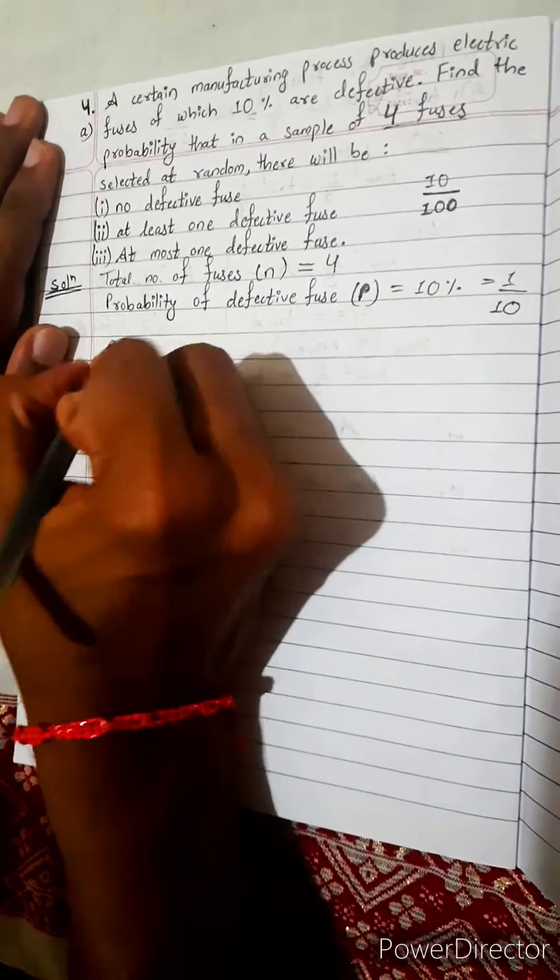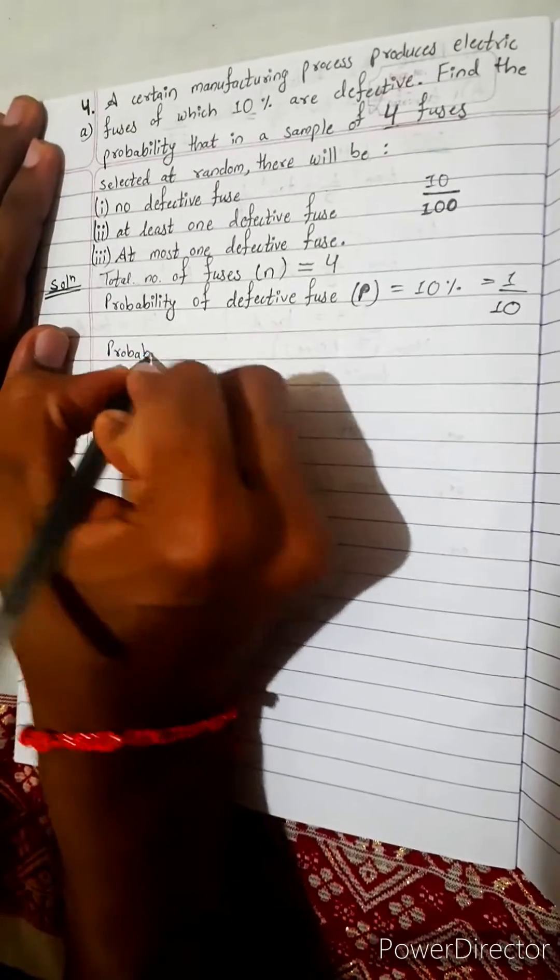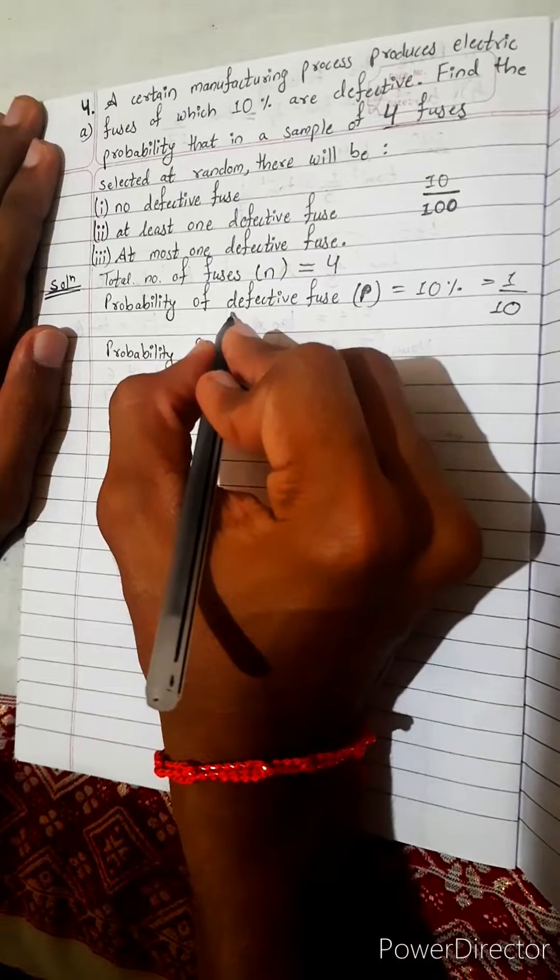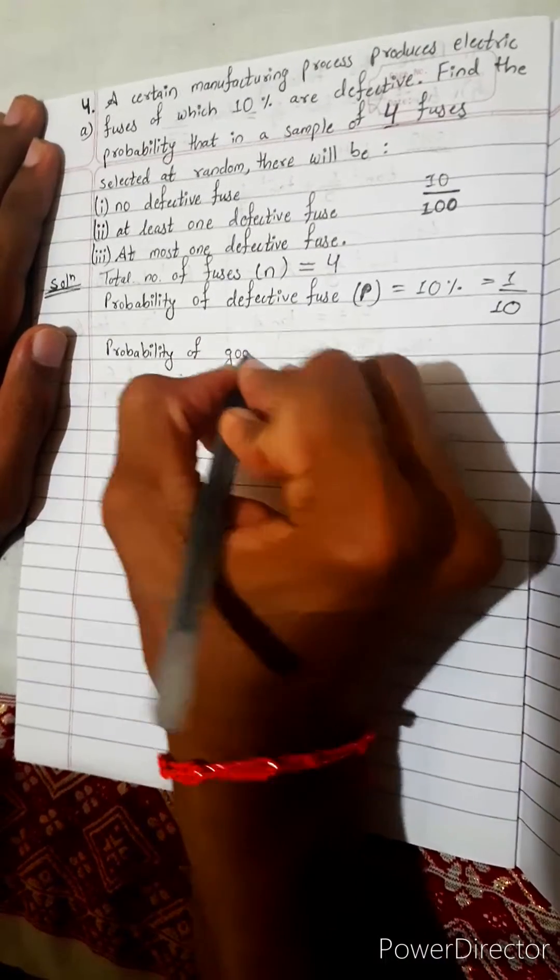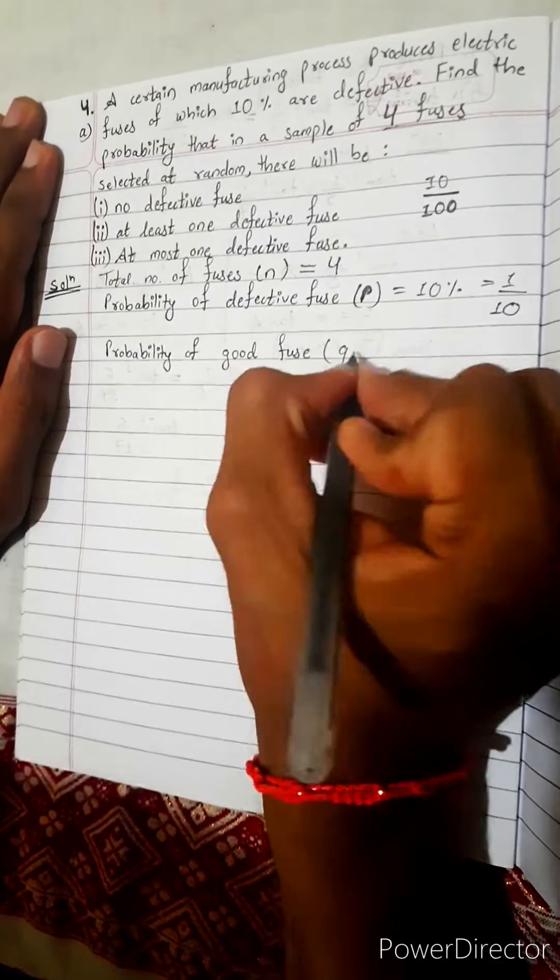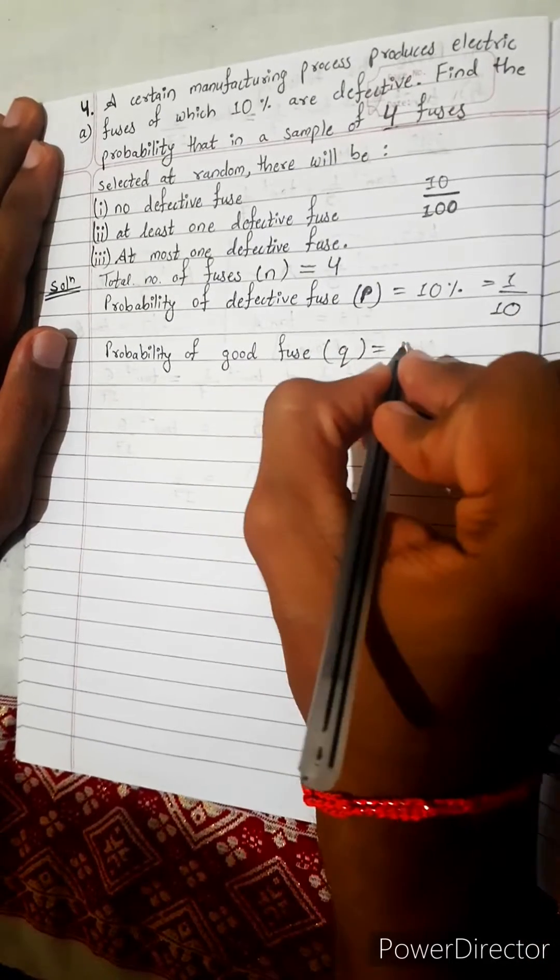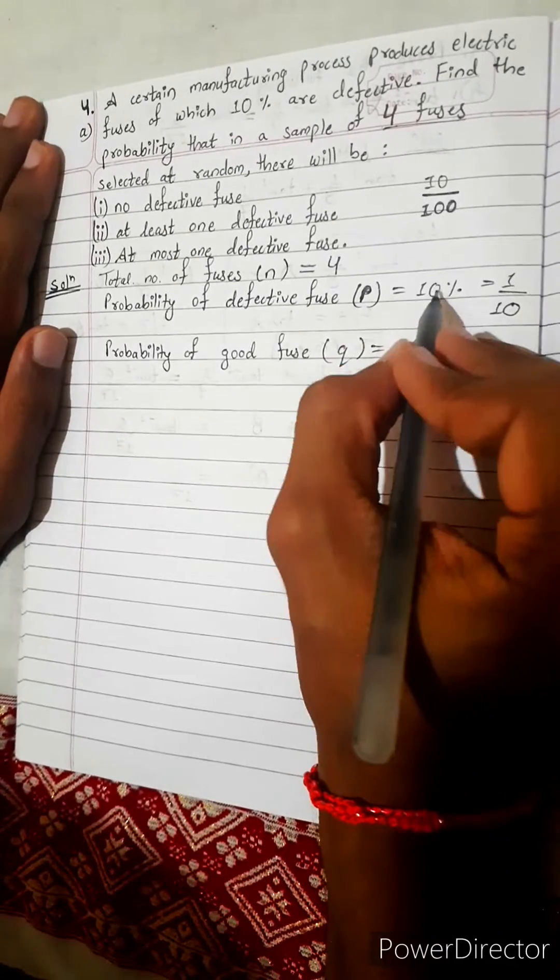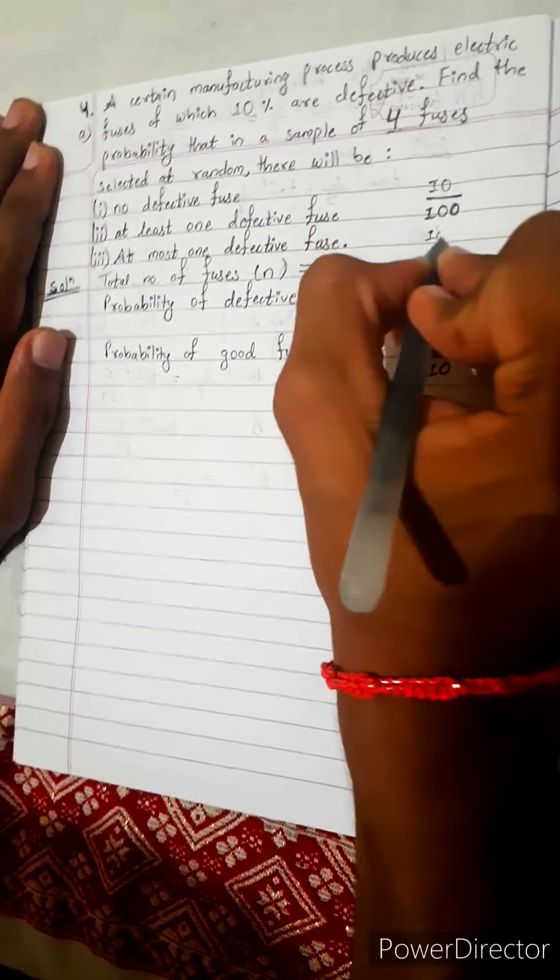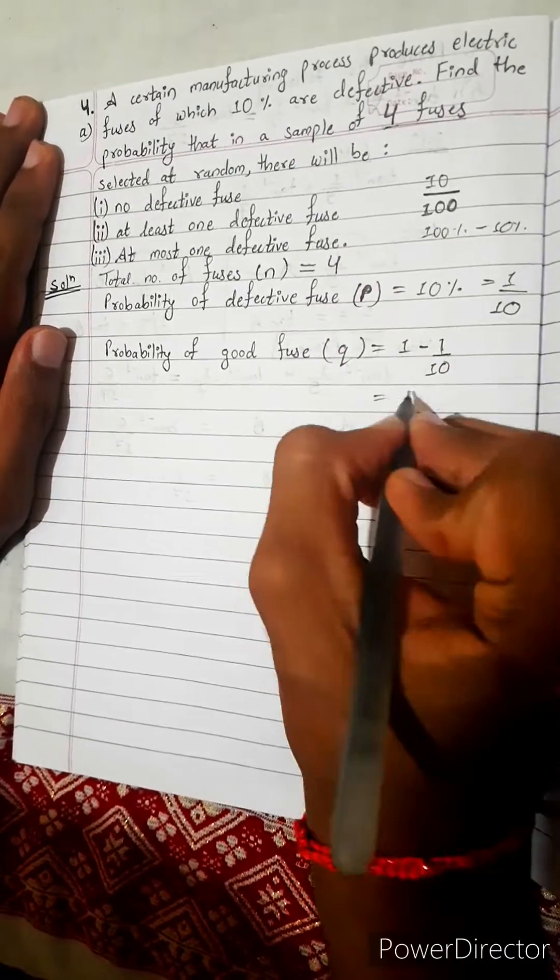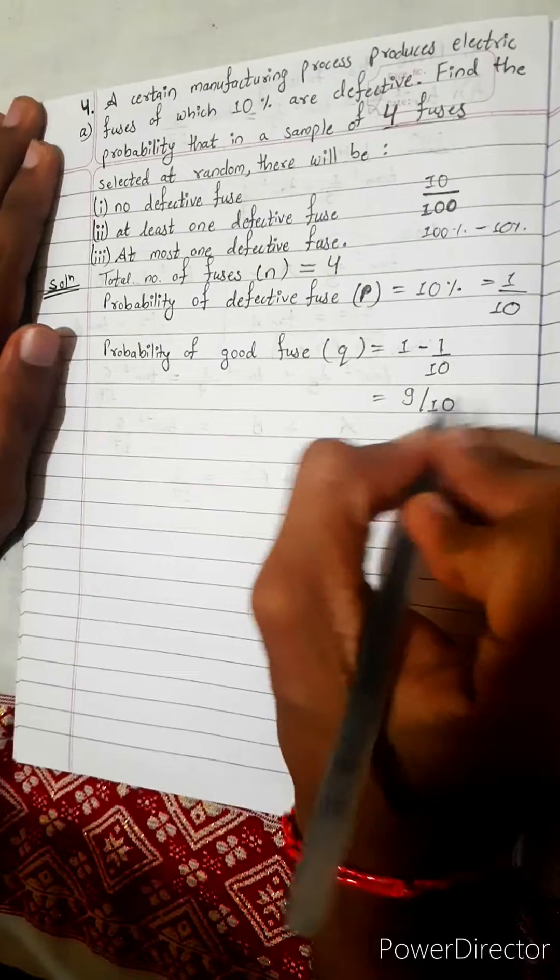If it is defective fuse, what is the probability of non-defective? Probability of opposite of defective, good fuse or non-defective fuse. Suppose q equals to 1 minus 1 by 10, or 100% minus 10%, 90%. It will come 9 by 10.